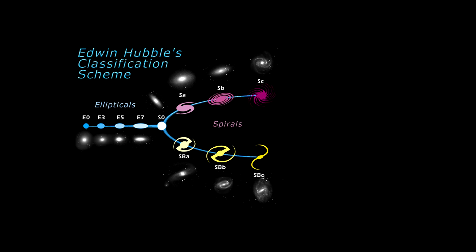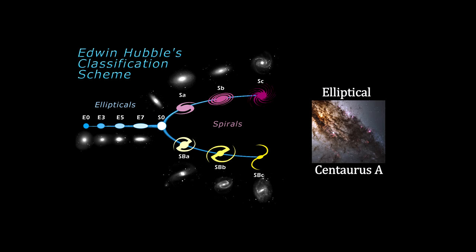Hubble's scheme divides galaxies into three broad classes based on their visual appearance. Elliptical galaxies have smooth, featureless light distributions and appear as ellipses in images, like Centaurus A. They are denoted by the letter E followed by the integer N, representing a degree of ellipticity.